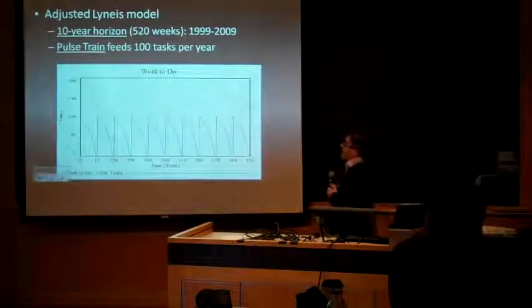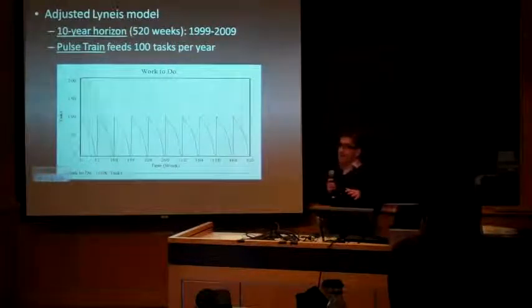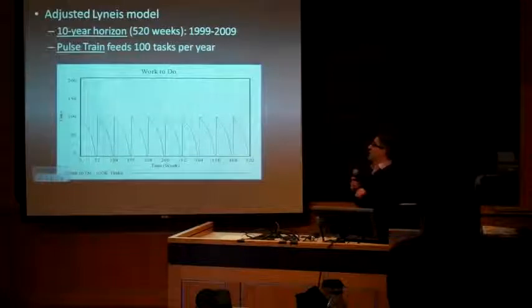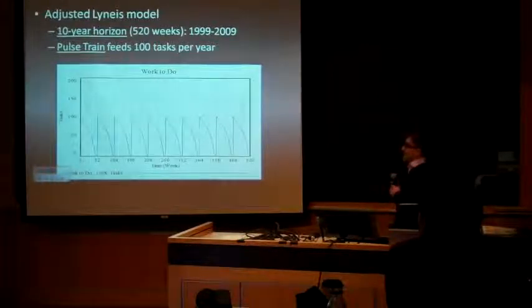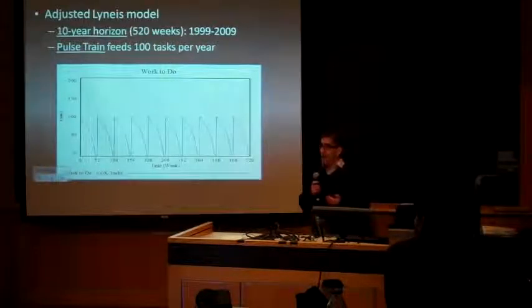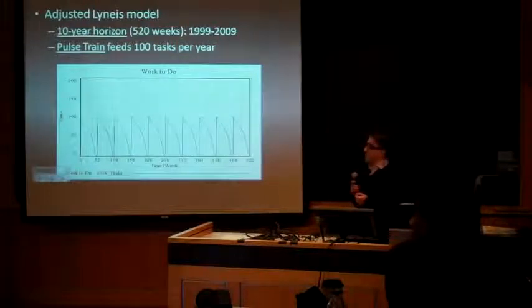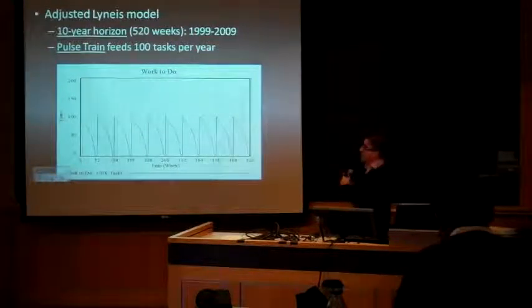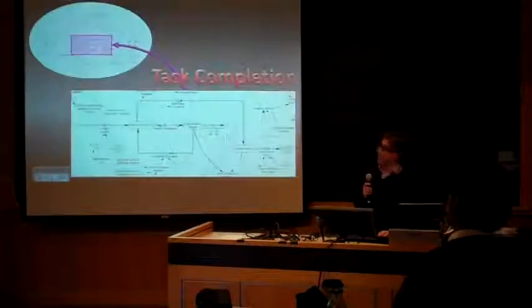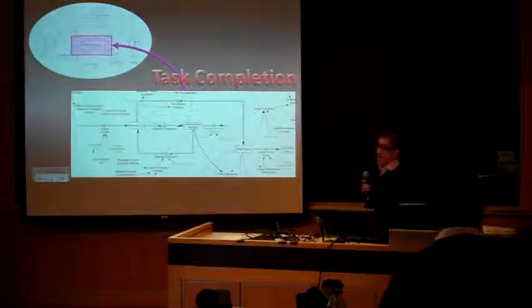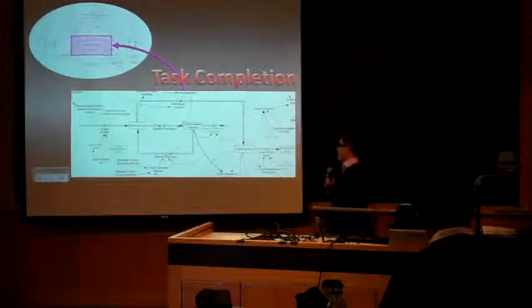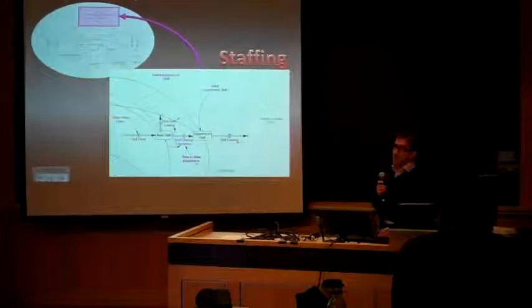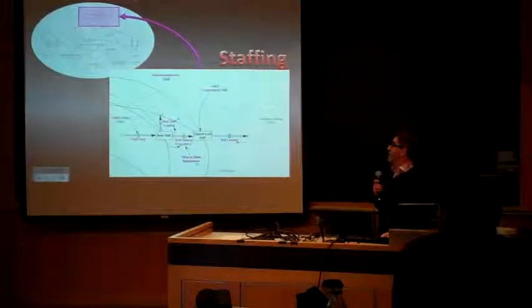We built the model using a staffing submodel and a task count submodel. We also developed a funding and sponsor part of the model. The main challenge we faced is that this is a temporary project — every year we run the same project again with the same kinds of tasks. To build a 10-year horizon, we developed a pulse train: 100 tasks every year are fed into the model as work to do, and when the work is done we reset the stock of work to do. Similarly for staffing, because we recruit volunteers every year, we developed the same pulse train approach.